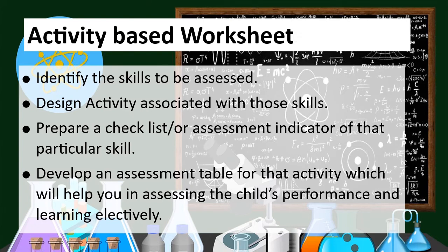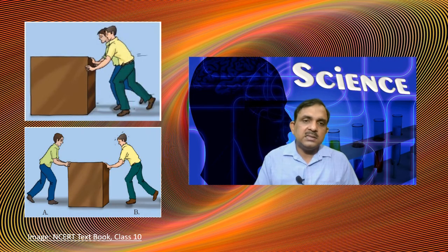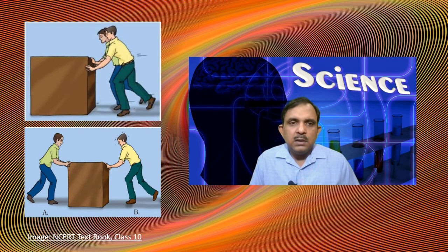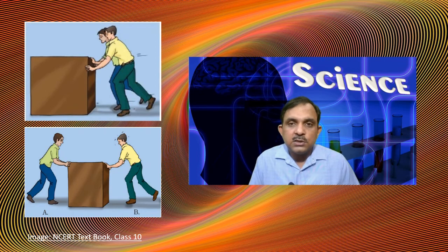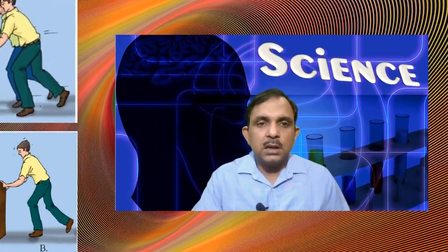Next are activity-based worksheets, which are very common in the lab. In an activity-based worksheet, we identify the skill to be assessed, then design the activity associated with that skill, and prepare a checklist or assessment indicator for it. We develop an assessment table for that activity which helps in assessing the child's performance and learning collectively. This example has been taken from an NCERT textbook of Class 10, showing two images: in one, two boys are pushing a single box in one direction, and in another, two boys are pushing the same box in opposite directions.